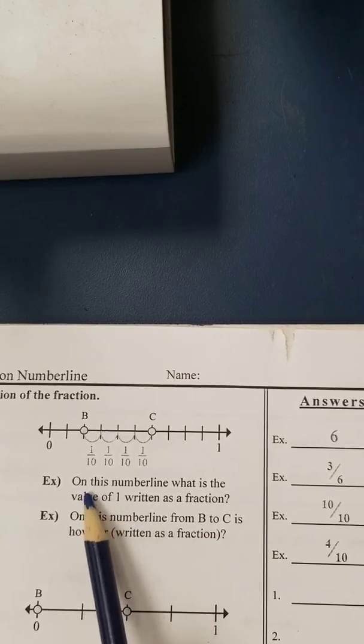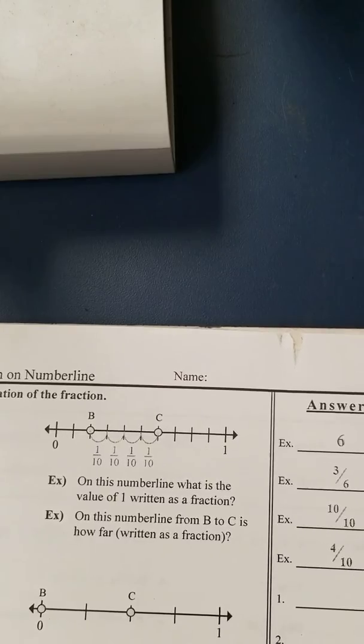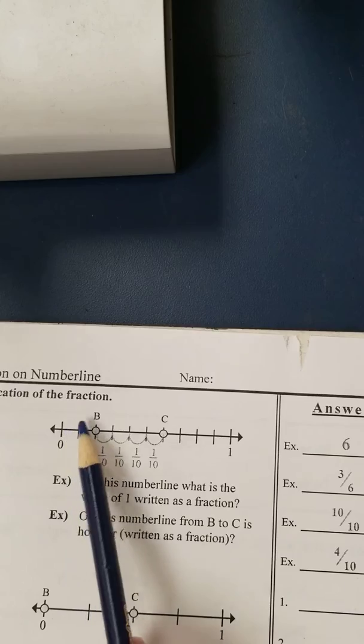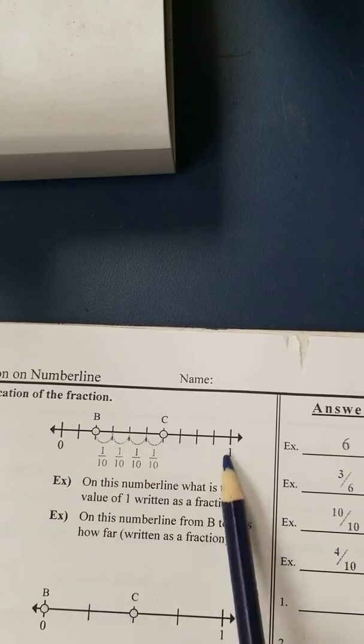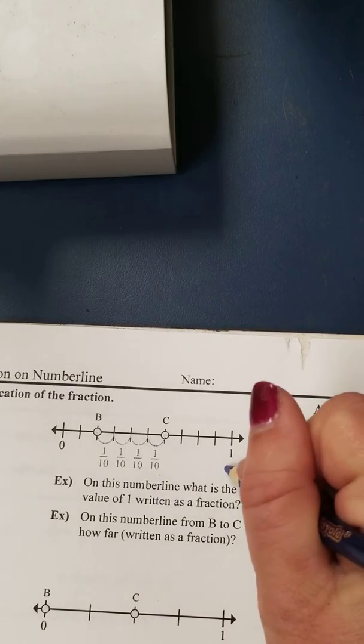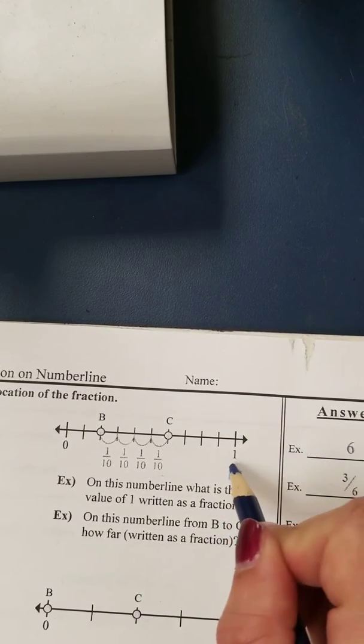The first question asks, on this number line, what is the value of 1 written as a fraction? Well, we've learned that when you count the number of pieces from 0 to 1, we put that number on the denominator. So at the 1's place, we would put a 10 down at the bottom of that fraction.